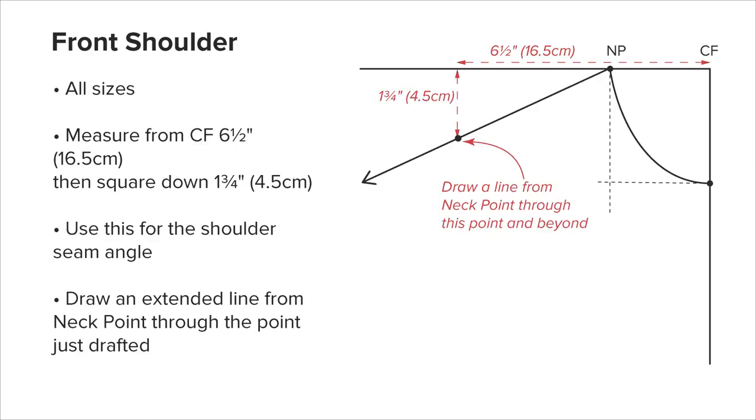The front shoulder: measure along the top line 6.5 inches or 16.5 centimeters from center front and square down 1.25 inches or 4.5 centimeters. Draw the shoulder line from the front neck point through the point just drafted and extend beyond. This is a provisional shoulder seam.